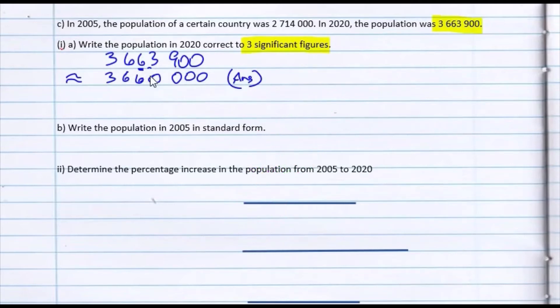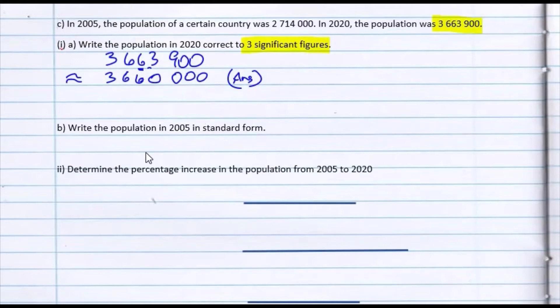This number is a good representation of the original. So we have approximated the population for the year 2020 to 3,660,000.